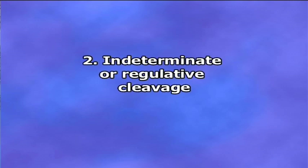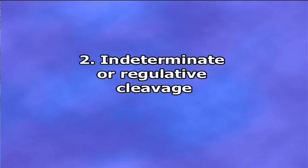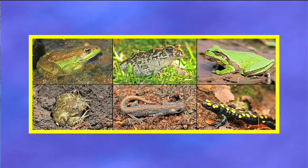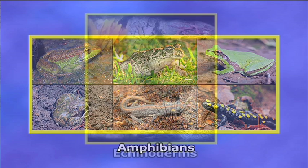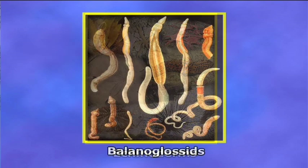Indeterminate or regulative cleavage occurs in the eggs of amphibians, echinoderms, and balanoglossids. This indeterminate type of cleavage pattern bears no exact relation to the future embryo. If blastomeres are isolated from the first cleavage, each could develop into a perfect embryo, though small in size.